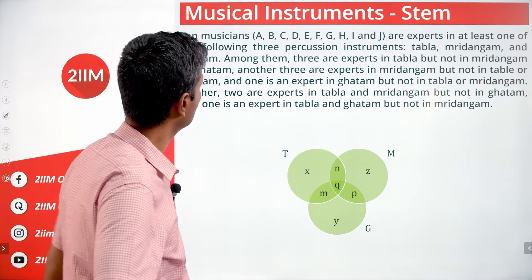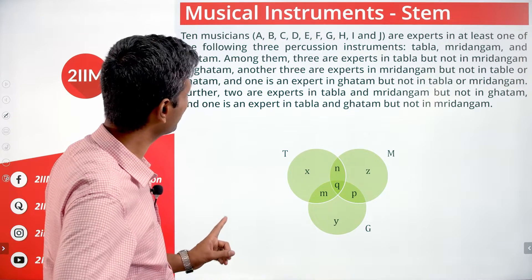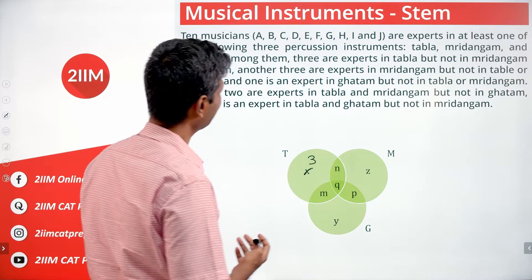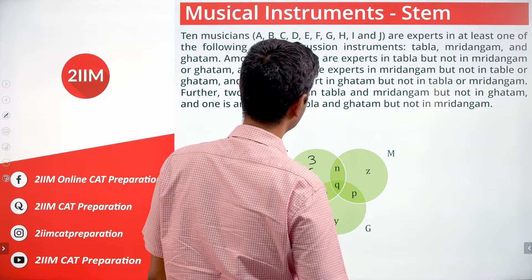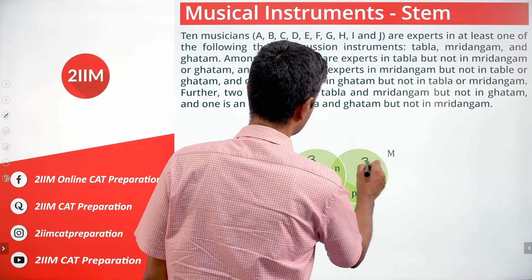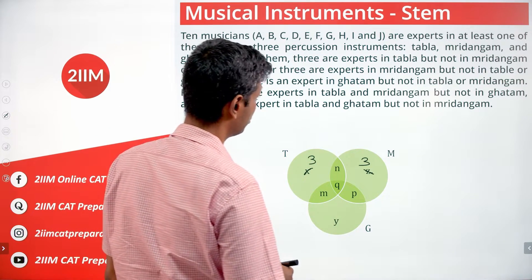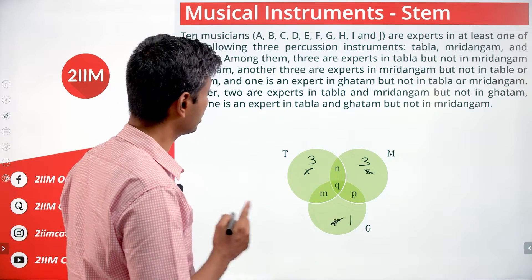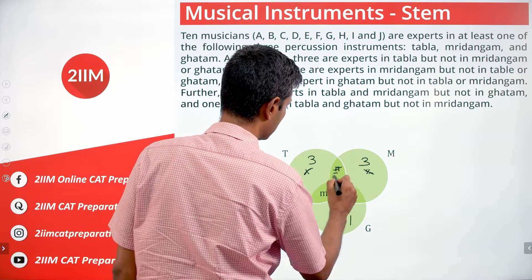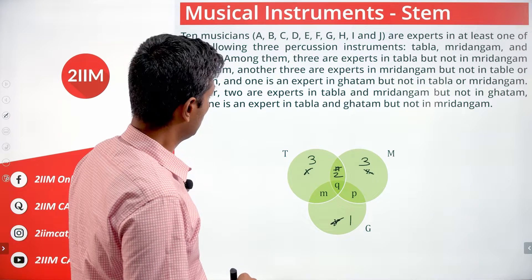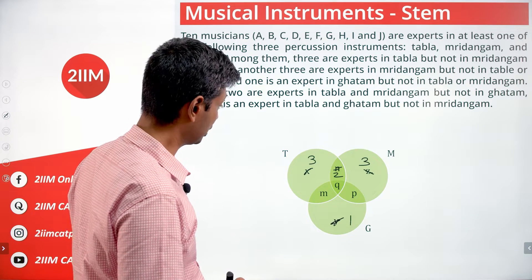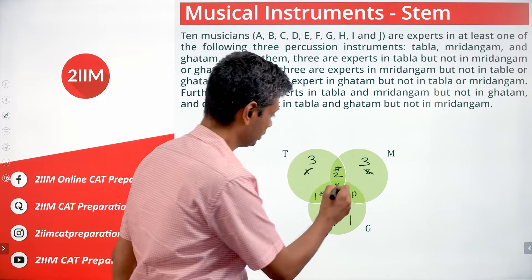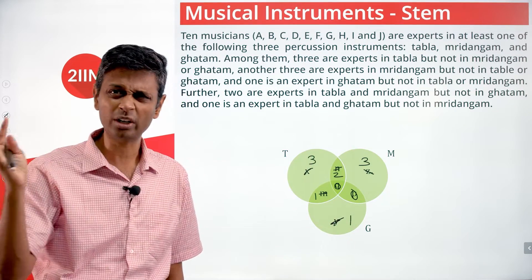Drawing the Venn diagram with Tabla, Mridhangam, and Ghatam. Three are experts in Tabla only, three in Mridhangam only, one in Ghatam only. Two are in Tabla and Mridhangam but not Ghatam, and one is in Tabla and Ghatam but not Mridhangam. The remaining intersections — Mridhangam and Ghatam, and all three — should be zero. All numbers are now in place.